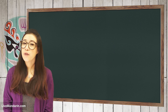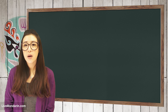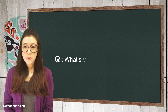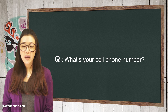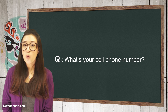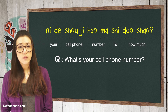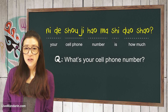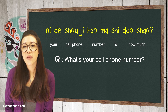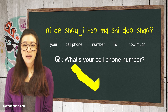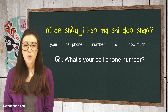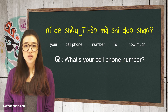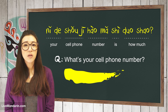If you're asking people's cell phone numbers, you can simply replace the word 电话 with 手机 in the question, which will then be 你的手机号码是多少?